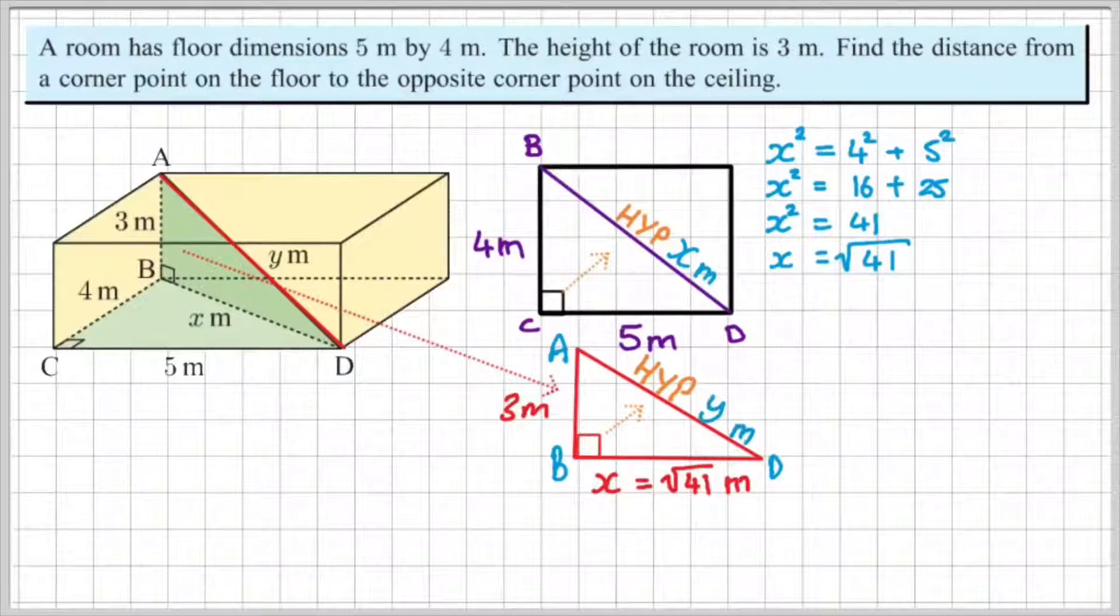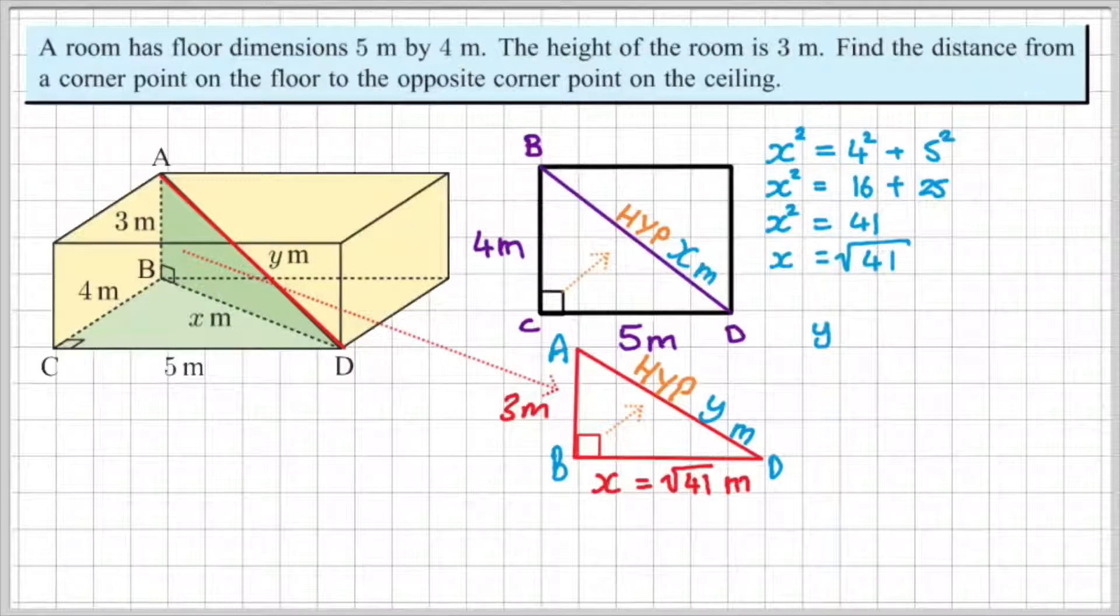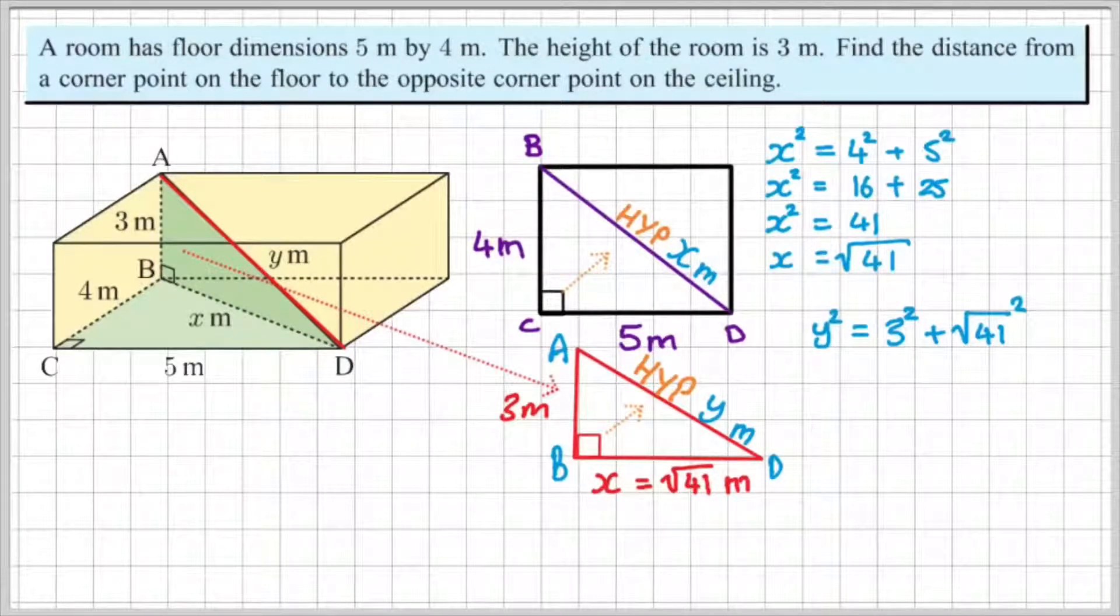So I know that opposite my right angle is the hypotenuse. I'm going to label that y. And then I'm going to set up my equation as y squared is equal to 3 squared plus the square root of 41 squared.